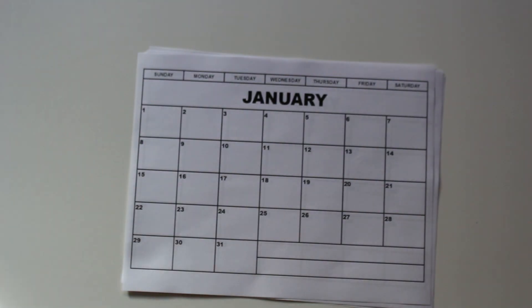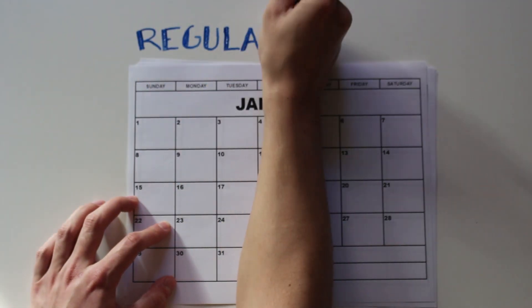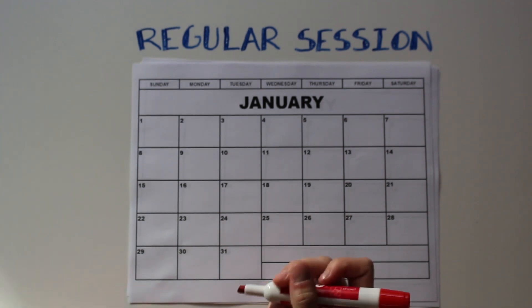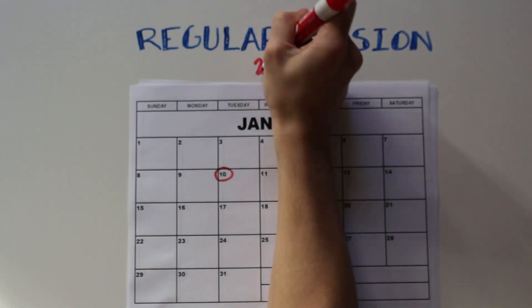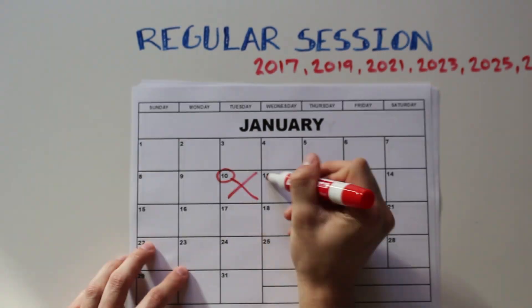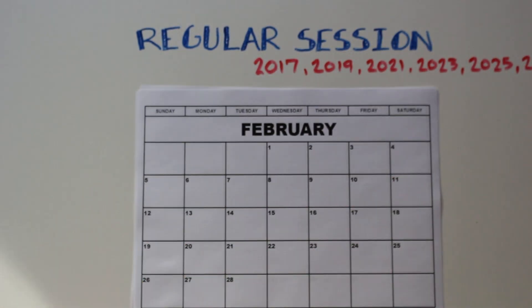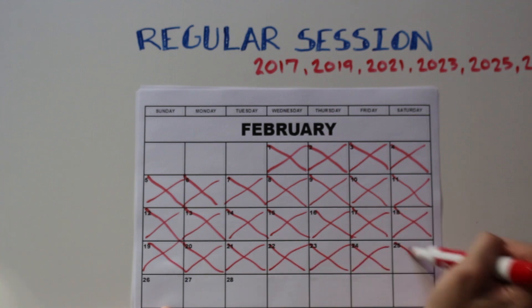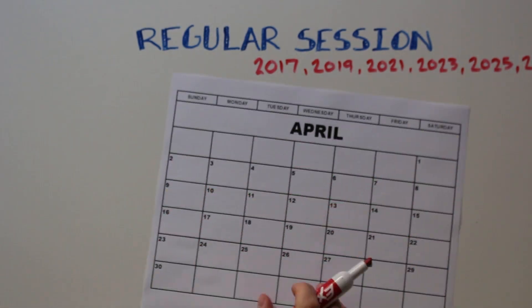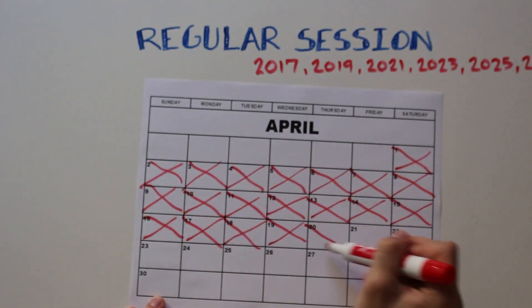The Texas Constitution declares that regular session be held on the second Tuesday at noon in January of each odd-numbered year for 140 calendar days. This year the session began on January 10th.